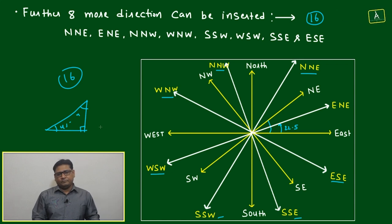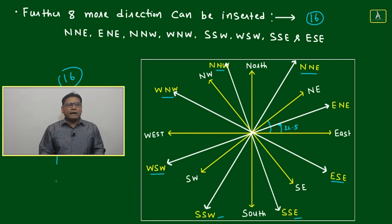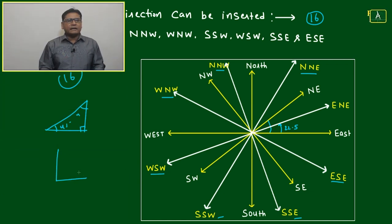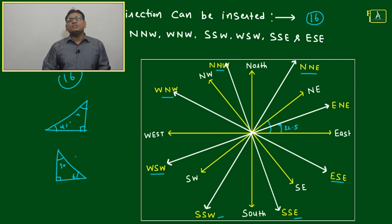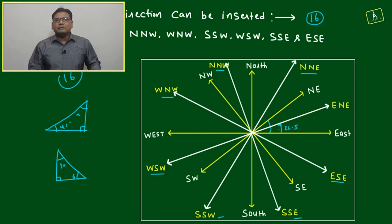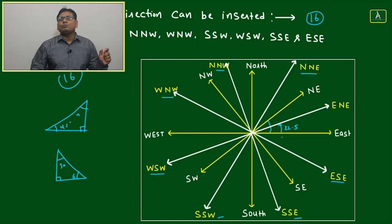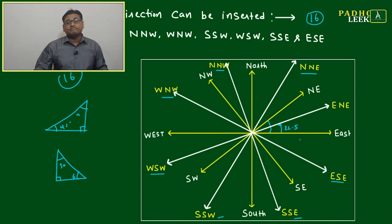In place of the 45-45-90 triangle, another standard right-angle triangle is the 30-60-90 triangle. However, if east-north-east or north-north-east directions are used, you have to deal with angles of 22.5°. What is the value of tan(22.5°)?